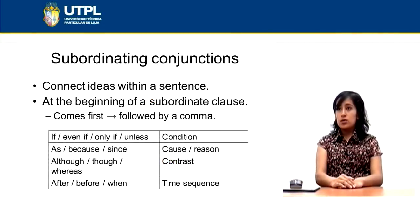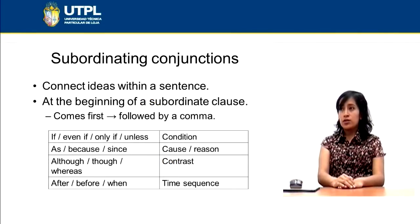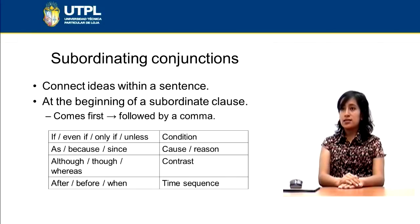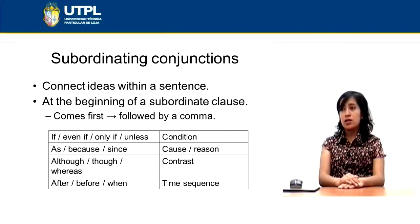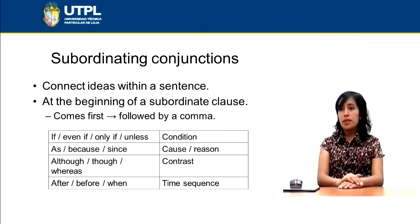Subordinating conjunctions are the second type of connectors. These connect ideas within a sentence. They can come at the beginning of a subordinating clause. If they come first, they are usually followed by a comma. Otherwise, they don't need one.